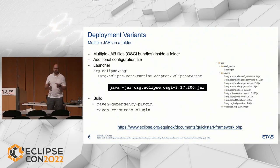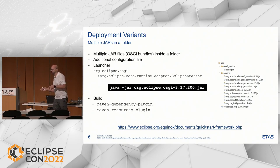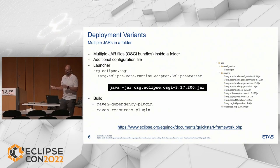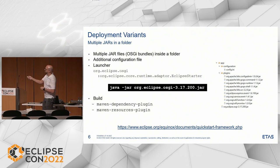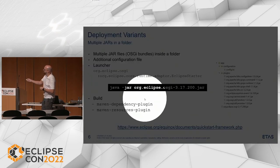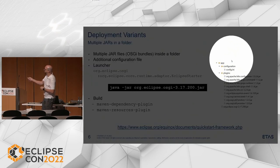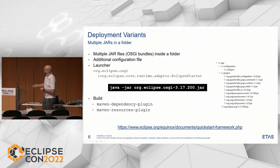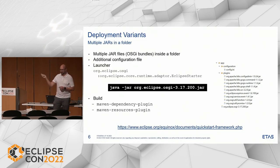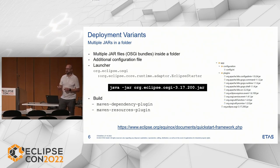Now let's have a look at how these deployment modes work for an OSGI application. Having all the JARs in a folder: you have your Eclipse or OSGI framework and this folder type — the class loading is done by the OSGI JAR. The most prominent example is the Eclipse IDE, which ships this way in folders.